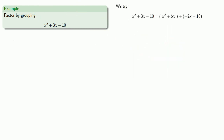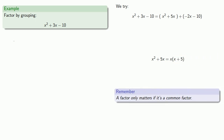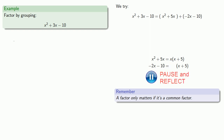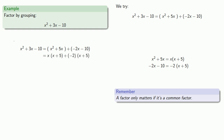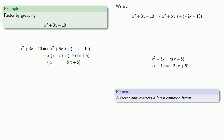Let's try x squared plus 5x minus 2x minus 10. Our first two terms have a common factor of x, so we'll remove it to get x times x plus 5. Now, a factor only matters if it's a common factor, so we need to check whether minus 2x minus 10 can be written as x plus 5 times something. And if we look at it, we can — it factors as minus 2 times x plus 5. So both terms have a common factor of x plus 5. Removing it, we get x minus 2, and our factorization is x plus 5 times x minus 2.